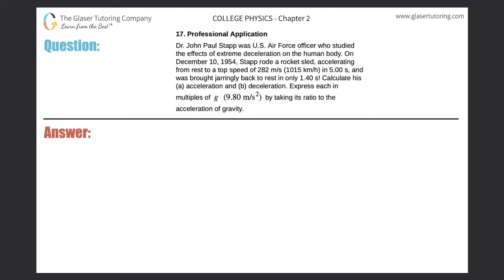Number 17, a professional application. Dr. John Paul Stapp, a U.S. Air Force officer who studied the effects of extreme deceleration on the human body. On December 10, 1954, Stapp rode a rocket sled accelerating from rest to a top speed of 282 meters per second in five seconds and was brought jarringly back to rest in only 1.40 seconds. Calculate his A, acceleration, and B, deceleration, and then express each of them in multiples of G.